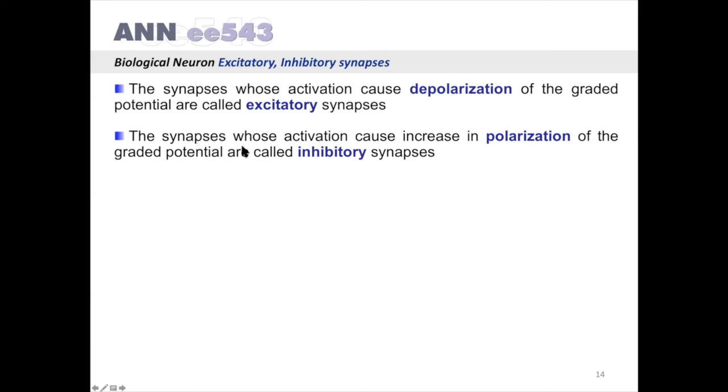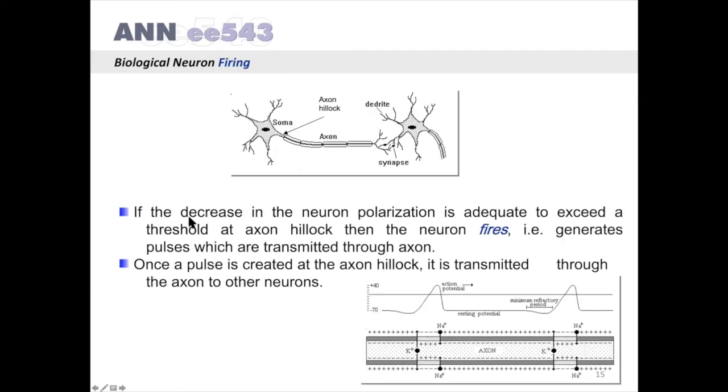The synapses whose activation cause increase in the polarization of the graded potential are called inhibitory synapses. If the decrease in the neuron polarization is adequate to exceed the threshold at axon hillock, then the neuron fires.